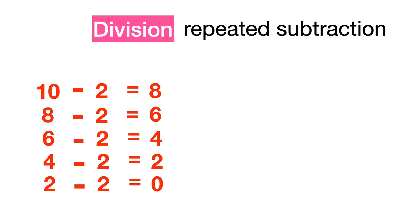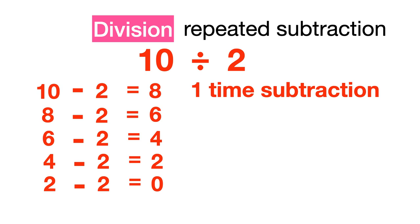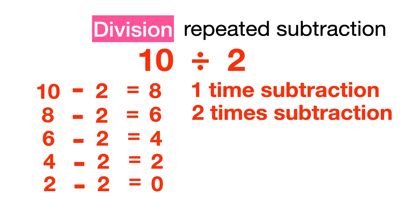Division is also known as repeated subtraction, and it should be repeated until you have 0 left. For example, 10 divided by 2: subtracting 2 from 10 once gives 8. Subtracting 2 again gives 6 — this is the result of 2 subtractions of 2 from 10. Since 6 can still be divided by 2, the division is not completed.